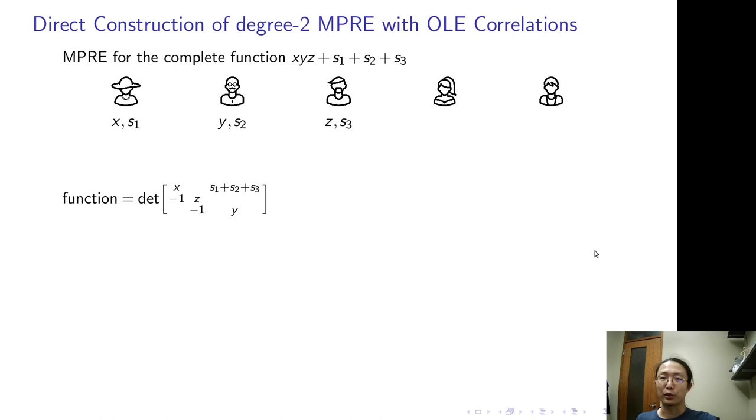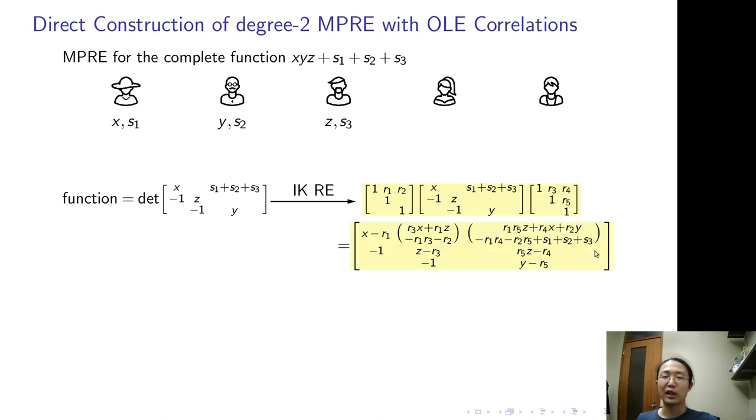The function output equals the determinant of this matrix. Apply IK-randomized encoding by multiplying a random matrix on both sides. And expand the encoding matrix. Observe that there is only one degree 3 term, and we need to somehow handle it.